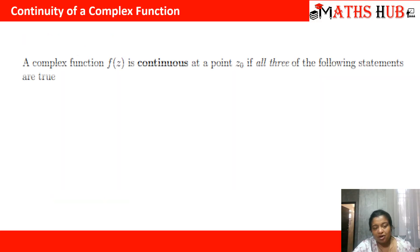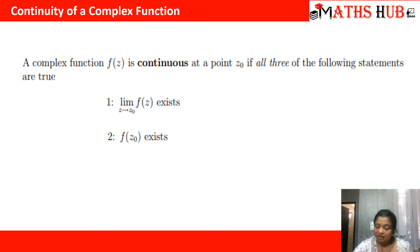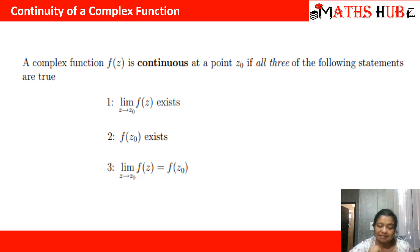Now what is continuity of a complex function? It is parallel to the same definition. A complex function f of z is continuous at a point z0 if all three of the following statements are true. First, the limit value of the function f of z as z approaches to z0 should exist. Secondly, f of z0 should exist, and the limit value must be equal to the value of the function at z0.